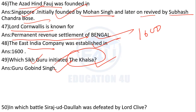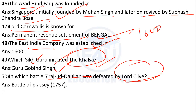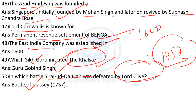In which battle was Siraj ud-Daulah defeated by Lord Clive? The answer is the Battle of Plassey. This was the 50th question about Indian history.